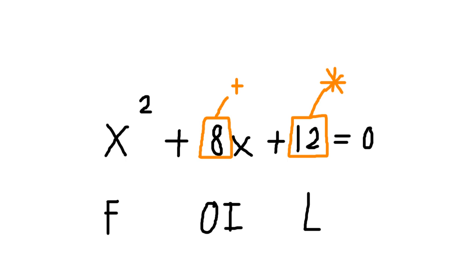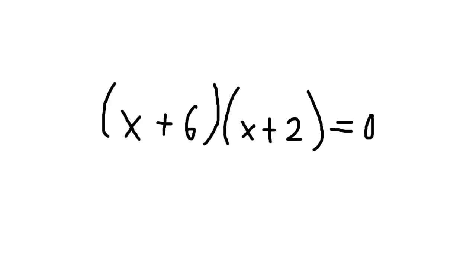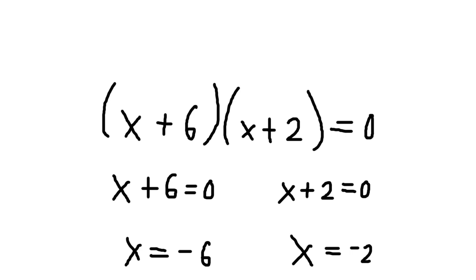Which two numbers add to 8 that also multiply to 12? Well, we can do this by listing all the pairs of factors of 12, and we conclude that the numbers are 6 and 2. And so, x equals negative 2 and x equals negative 6 are the two solutions to this expression.